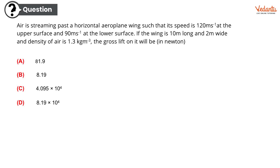Moving on to a very interesting question. Air is streaming past a horizontal aeroplane wing such that its speed is 120 m per second at the upper surface and 90 m per second at the lower surface. If the wing is 10 meters long and 2 meters wide, and density of air is 1.3 kg per meter cube, the gross lift on it will be how much in Newtons. That looks like a very easy question — standard application of the formula. If you know the formula, you are going to do it very well.